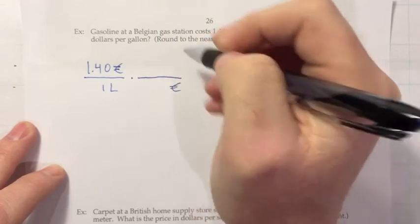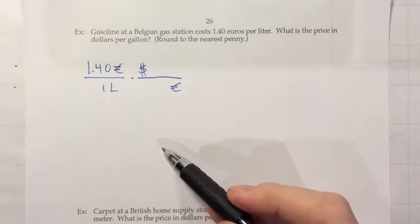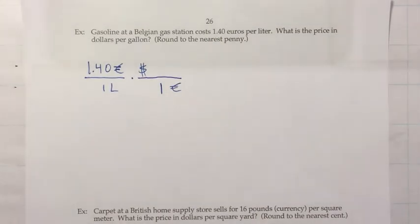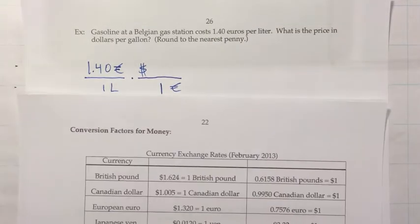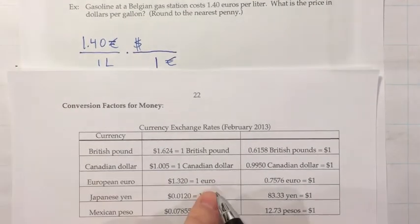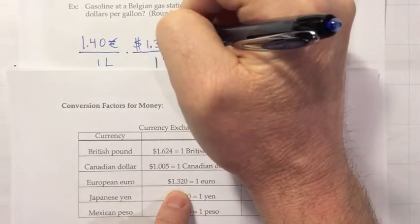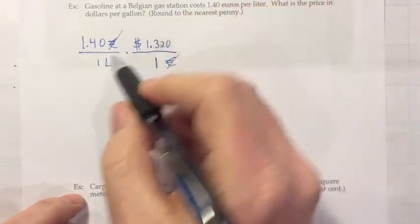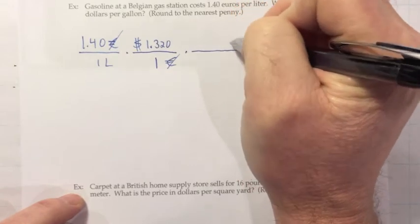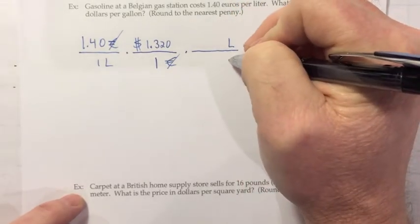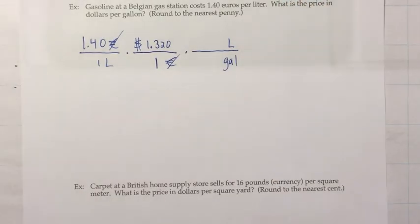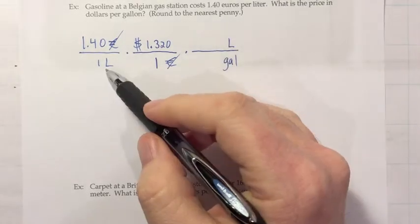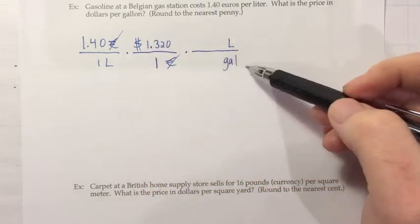I'm going to try and get rid of the euros and switch it to dollars. And I know from our currency chart before, I have a choice of whether I put a 1 in the top or the bottom. And I like a 1 in the bottom. So I want to know 1 euro equals how many dollars. So I bring in that currency chart from the previous section. And we have 1 euro equals 1.320 dollars. All right. So that will get the euros to cancel. And now I have dollars per liter, but I don't want it to be liters, I want it to be gallons.